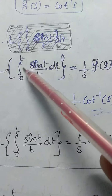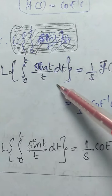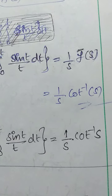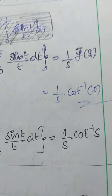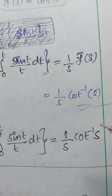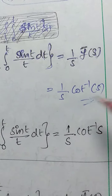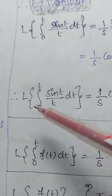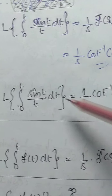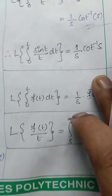Now apply the Laplace transform of the integral: L{∫₀ᵗ (sin t / t) dt} = (1/s)·F̄(s). Since F̄(s) = cot⁻¹(s), we get (1/s)·cot⁻¹(s). Therefore, the Laplace transform of ∫₀ᵗ (sin t / t) dt equals (1/s)·cot⁻¹(s). This is the required solution.